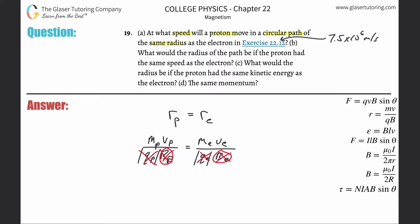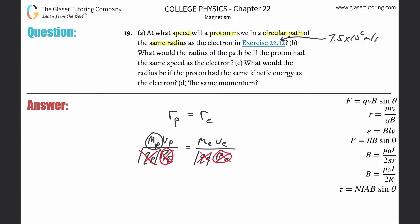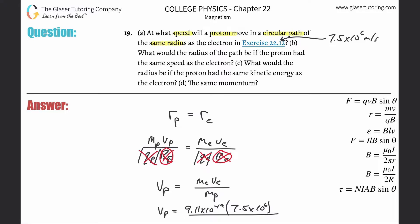We now have a nice simple relationship between the two. To find the velocity of the proton, I just divide the mass of the proton from both sides. So we get the mass of the electron times the velocity of the electron divided by the mass of the proton. The mass of the electron is 9.11 times 10 to the minus 31. The velocity of the electron was given as 7.5 times 10 to the sixth. Divided by the mass of the proton, which is 1.67 times 10 to the minus 27th kilograms.